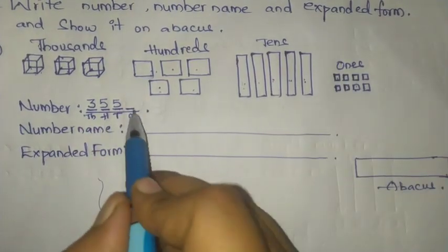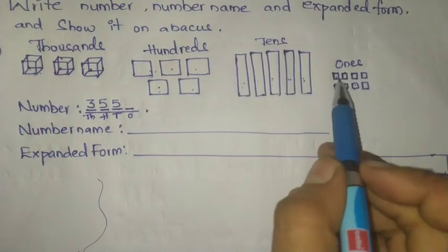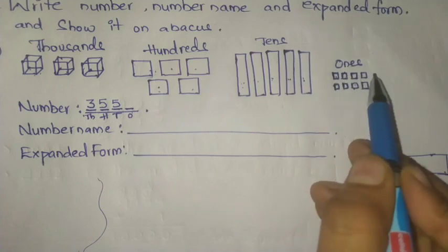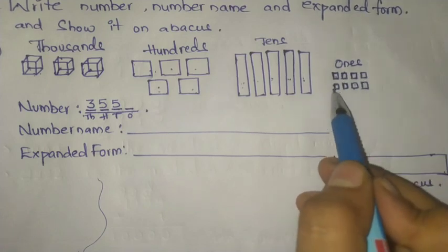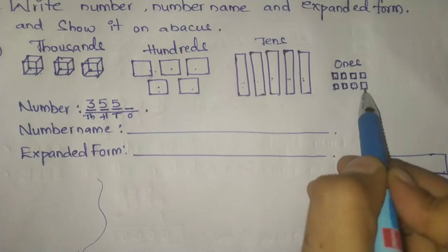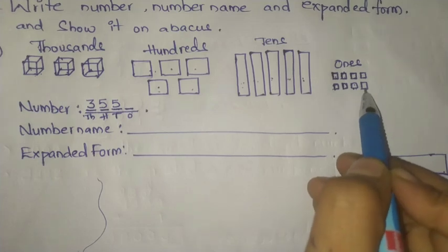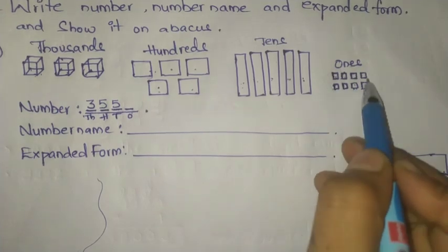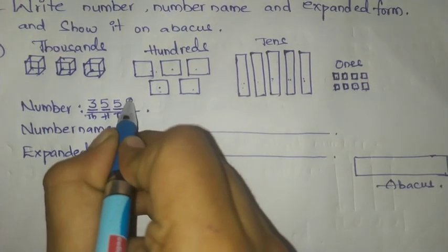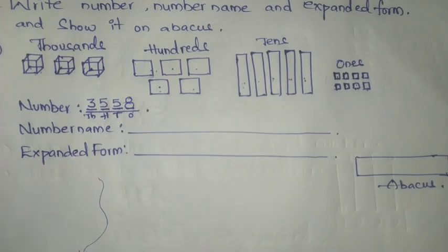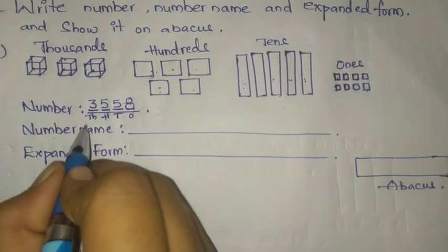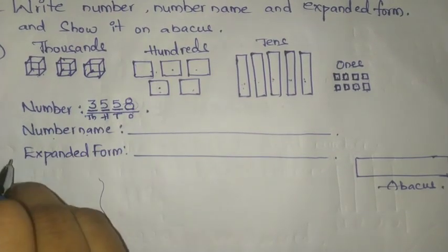How many ones are here? One, two, three, four, five, six, seven, eight — eight ones. So here we write eight. Now we have to write the number name for this number.